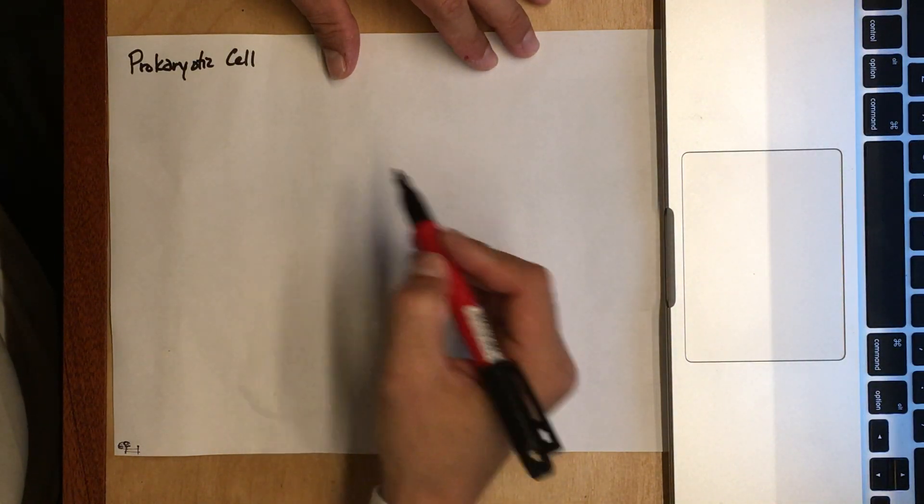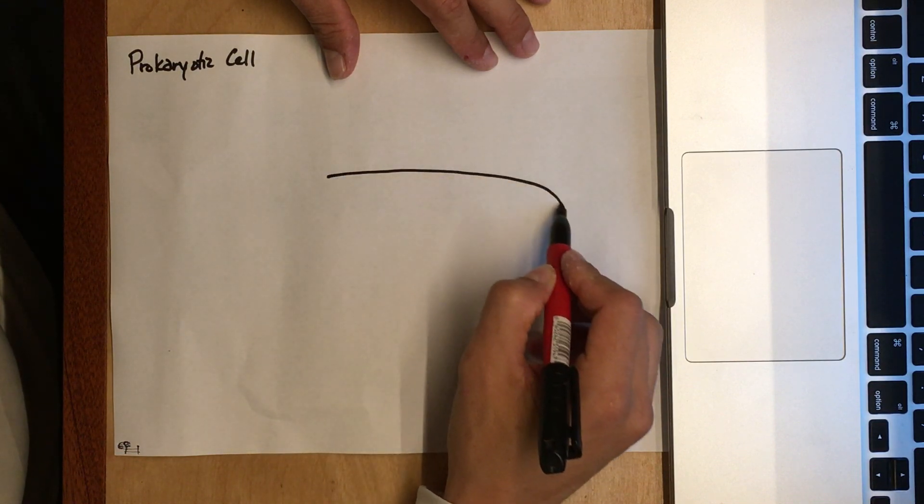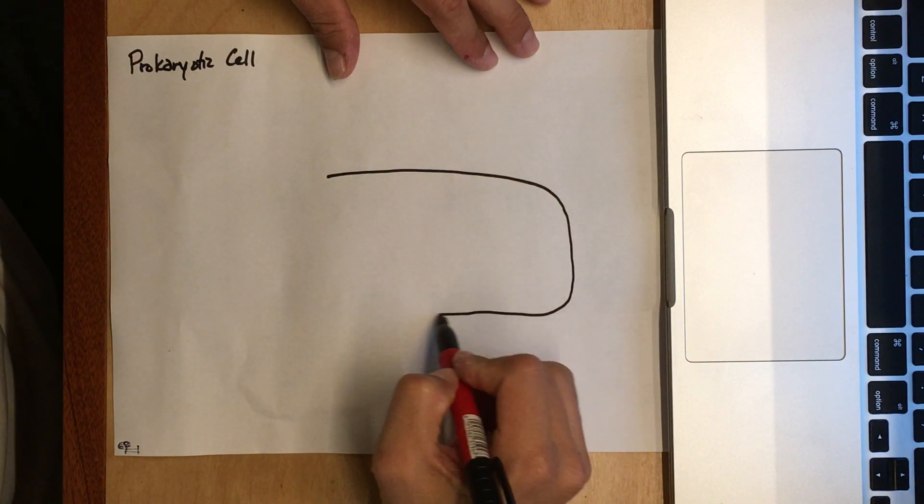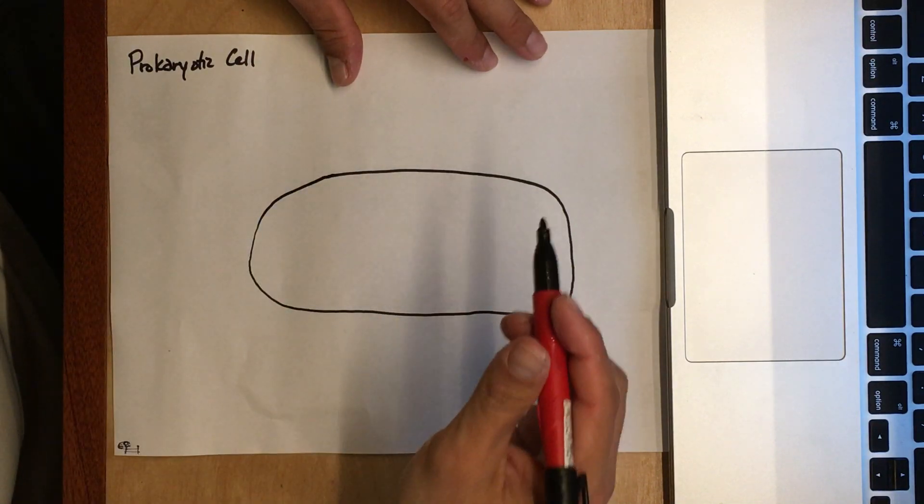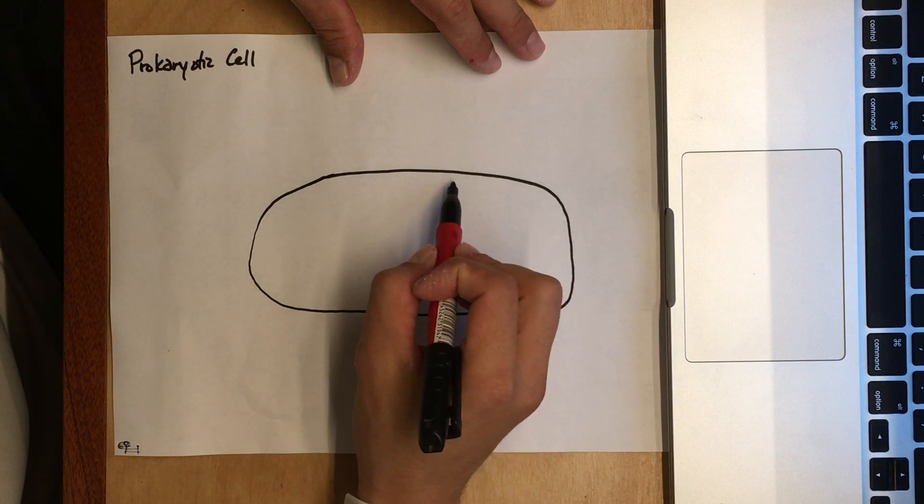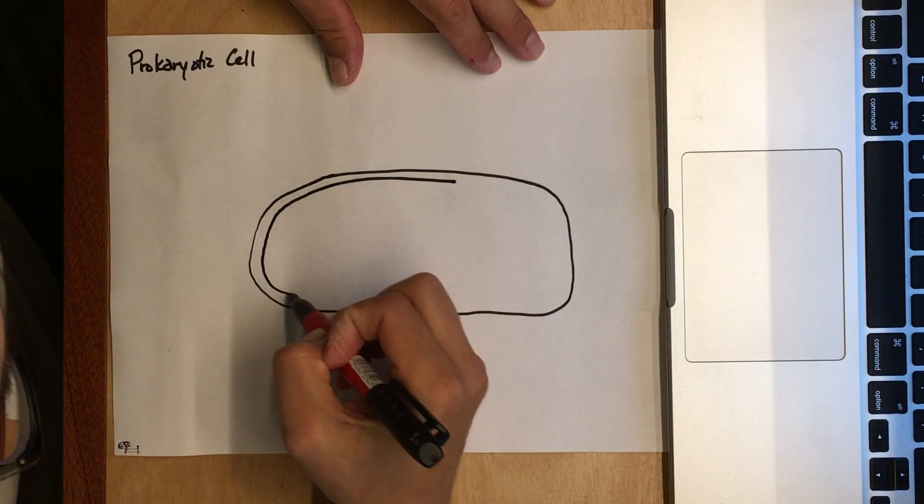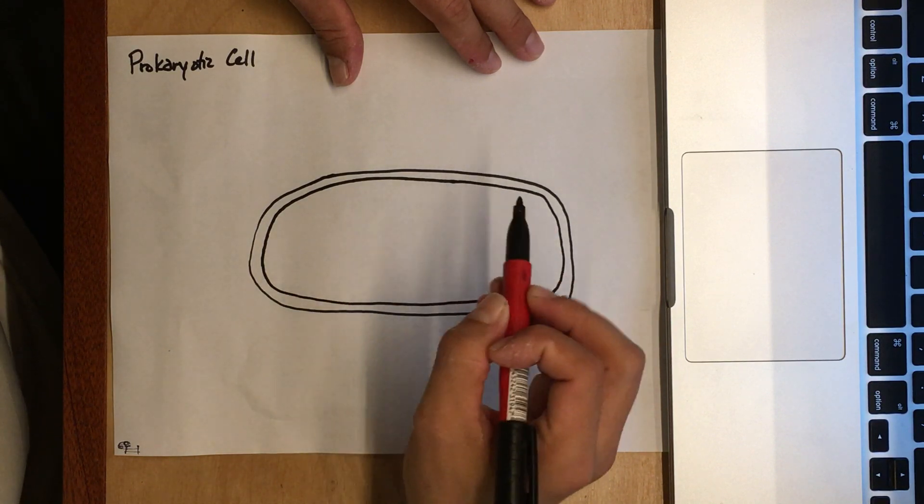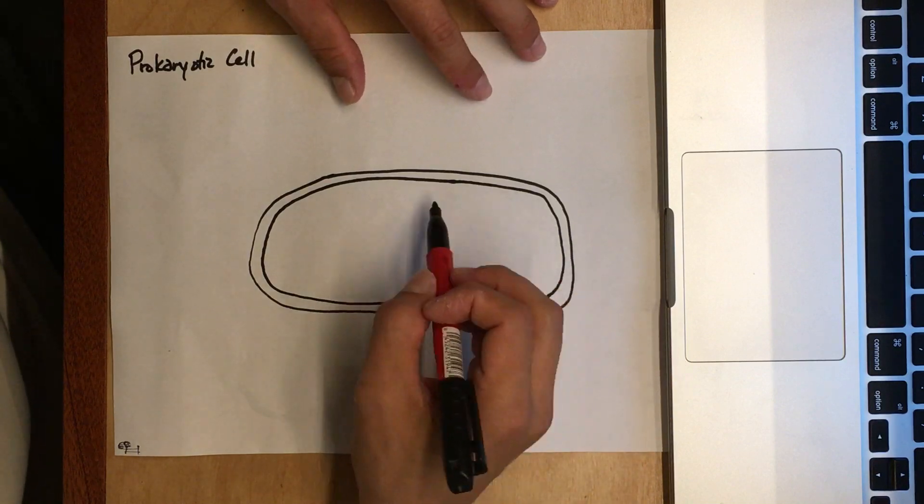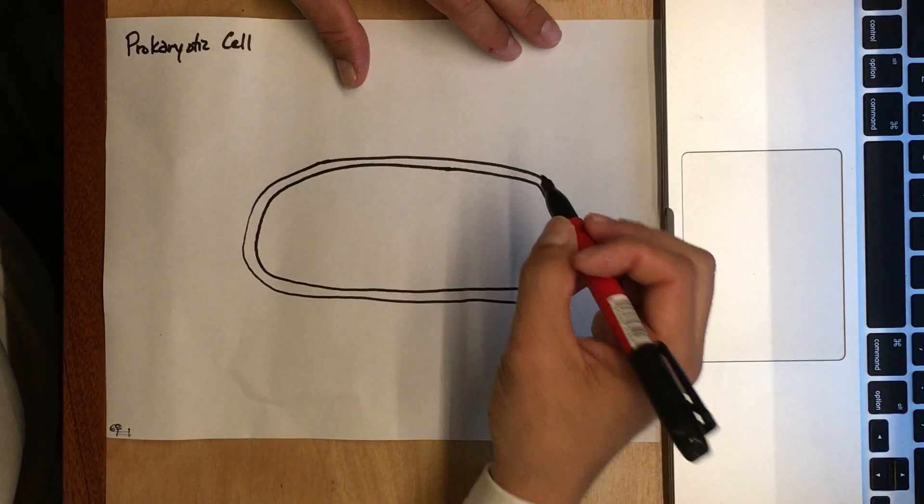When drawing a prokaryotic cell, it starts looking something like this. We'll draw the outside of the cell. In a prokaryotic cell, there are a couple different layers on the outside. There's one really thick layer here, and I'm not going to draw another layer, but this is actually two objects.